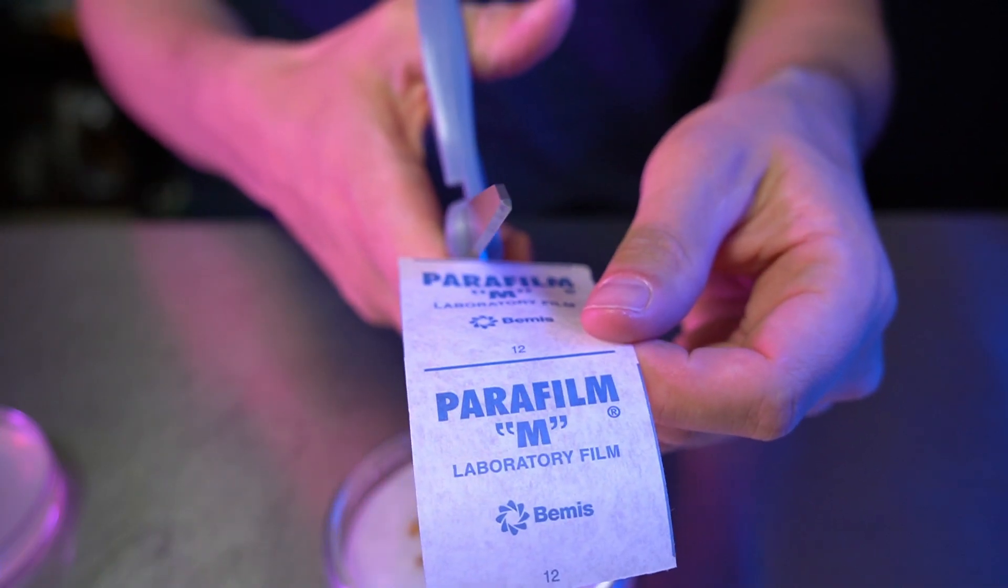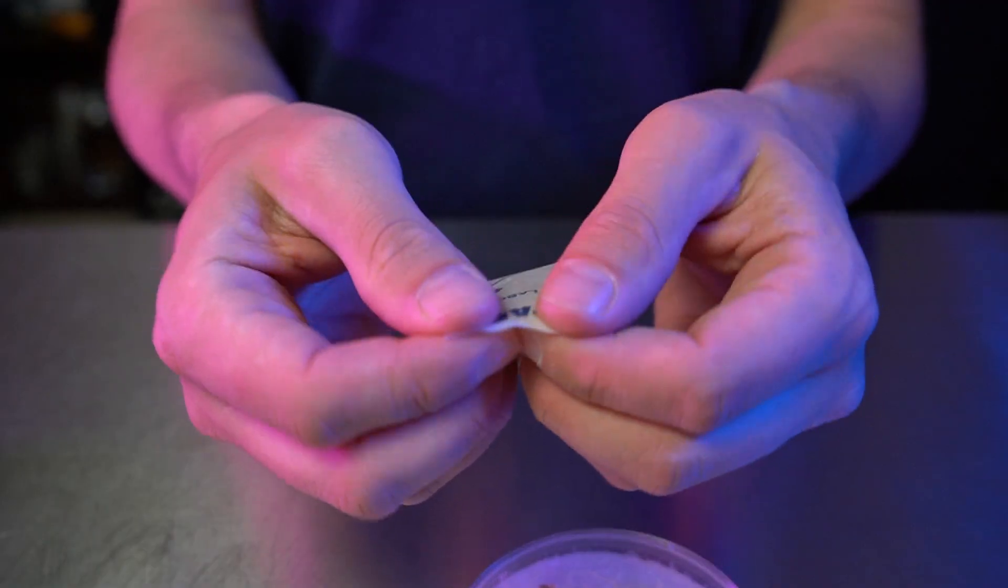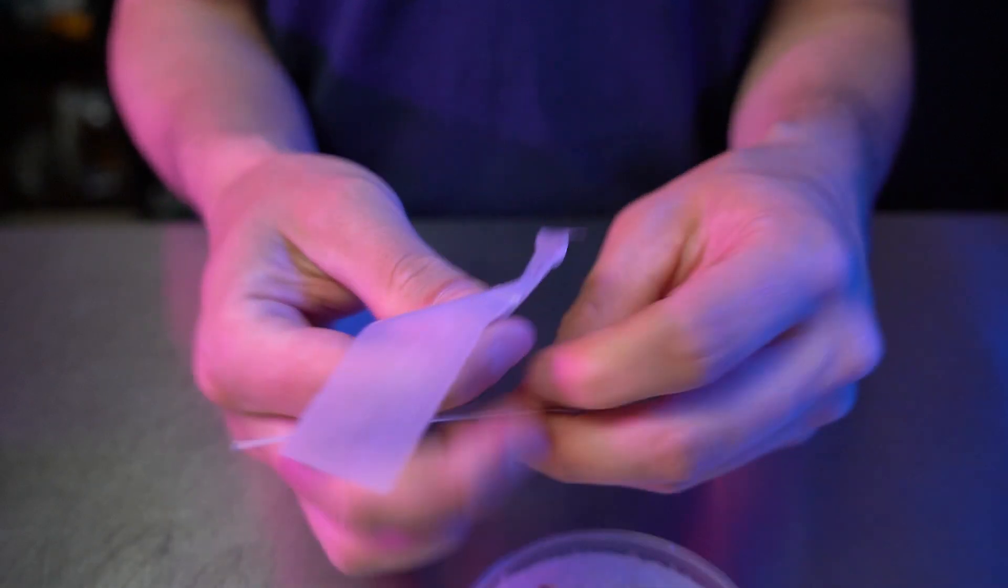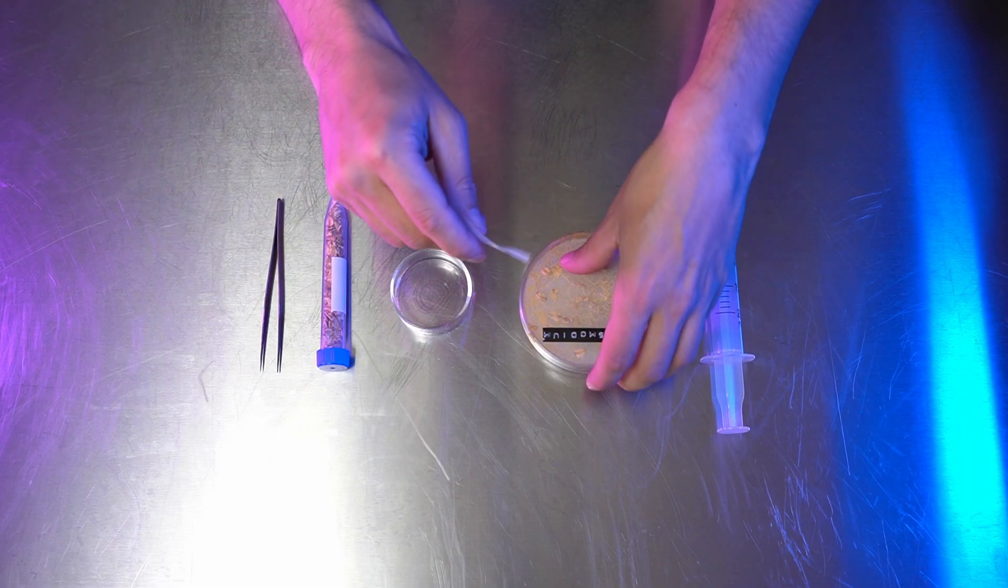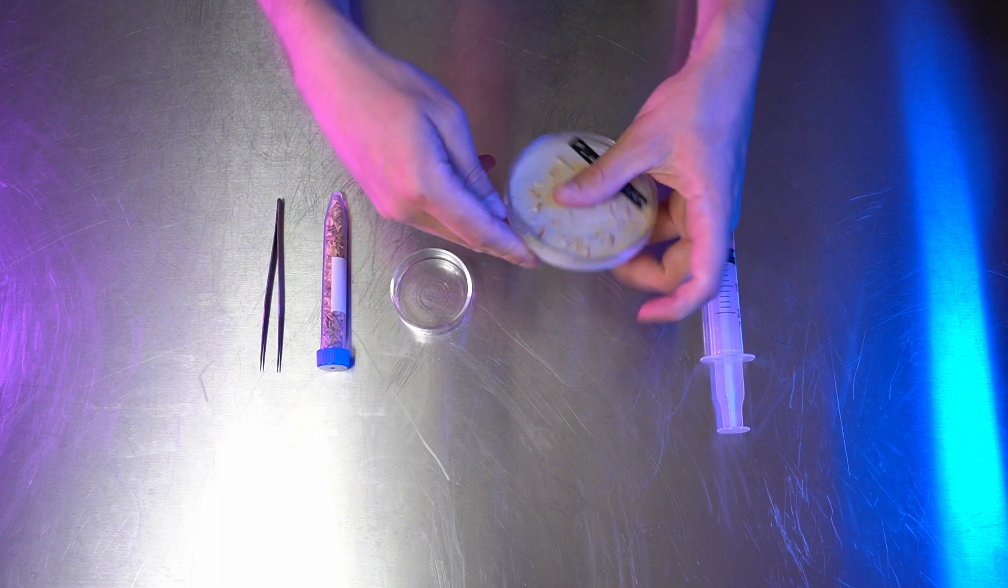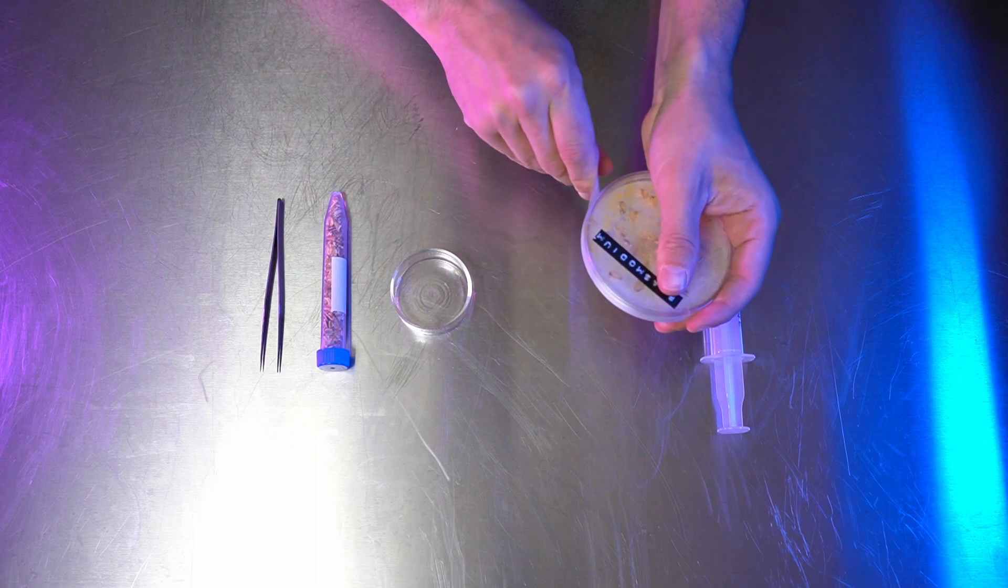You can seal up your dish with parafilm or cling wrap. Two squares of parafilm cut in half is plenty to wrap around a single dish. Hold one end of the parafilm down with one hand and stretch it as you wrap it around the edge of the plate. This will help keep your dish closed, keep out contamination, and allow air exchange.